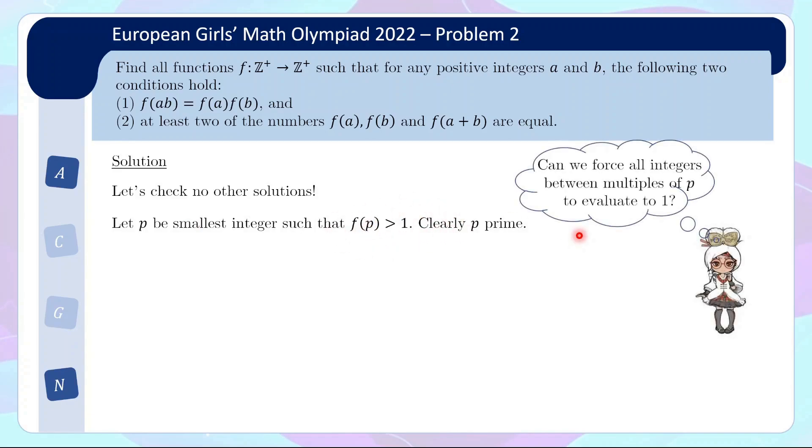Then the question is, if we think about the example we did earlier on, can we then use a similar logic to force all integers between multiples of p to evaluate to 1? That's what we essentially did for the example in the table, where we force f(3) equals 1 by looking at the neighbor 2 and 4. Well, actually, I'm going to be slightly lazier in this case. This turns out to be too ambitious a goal for a start.